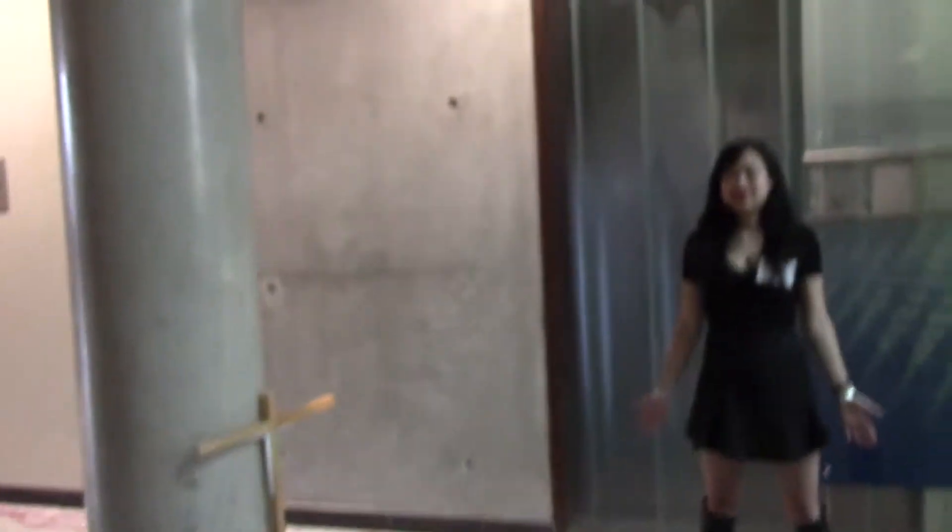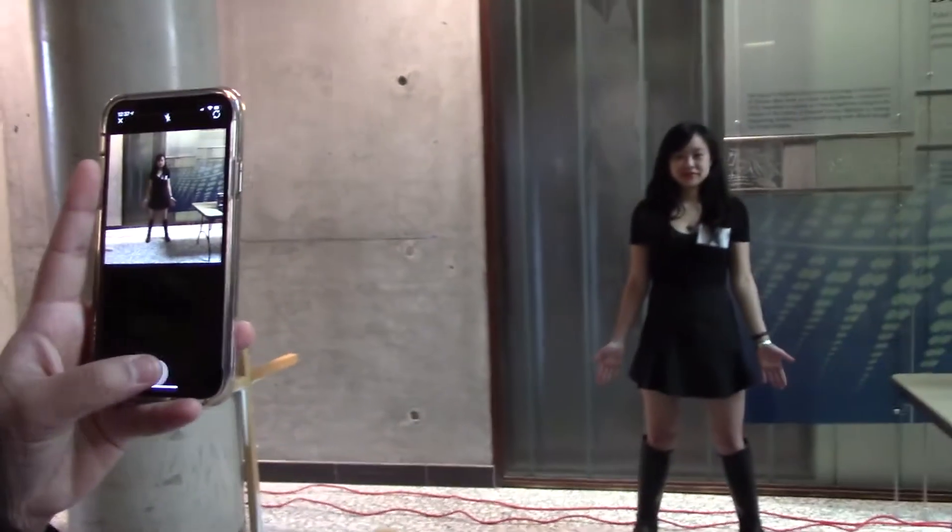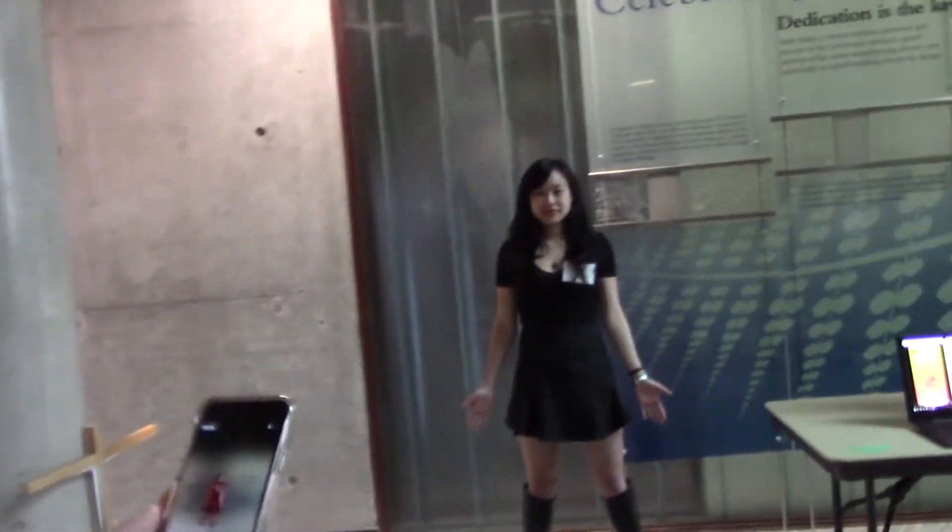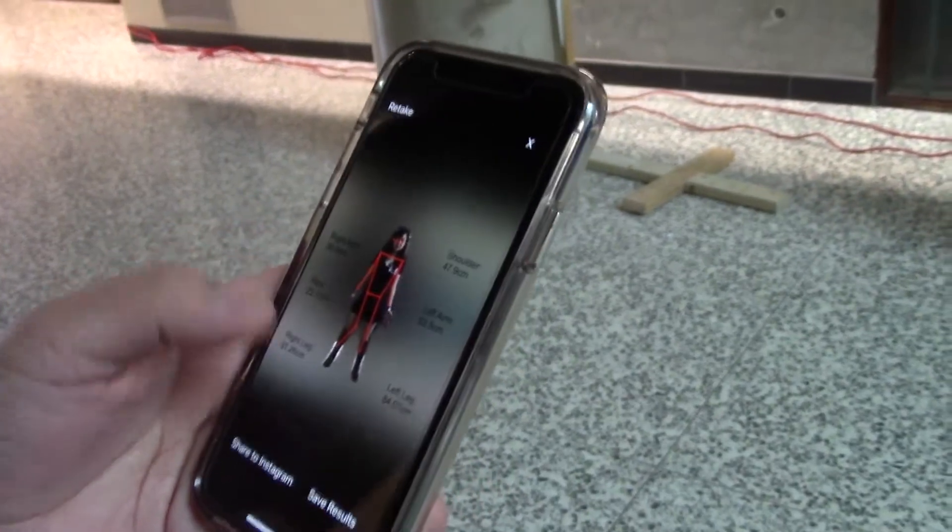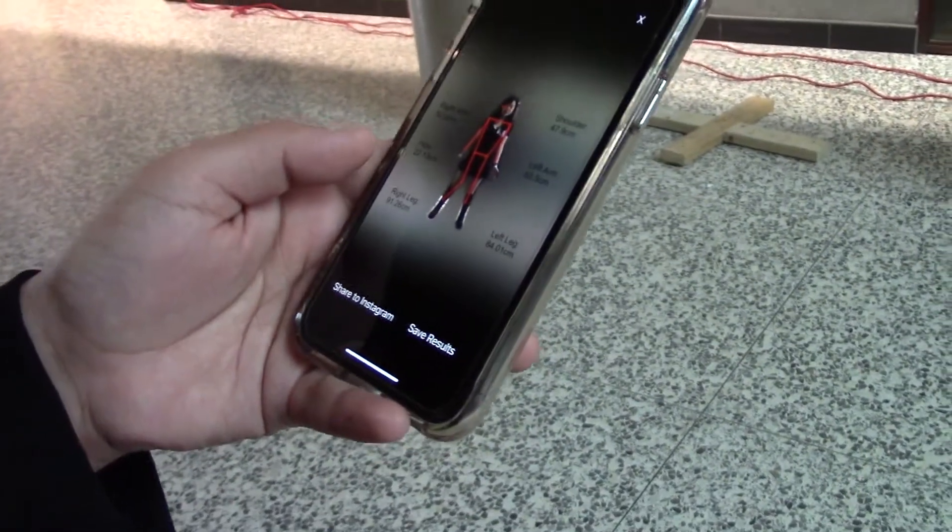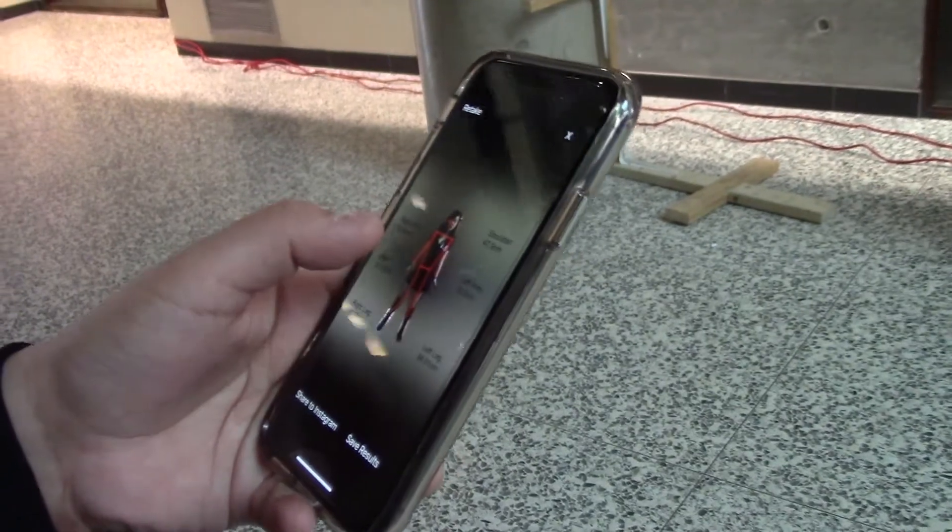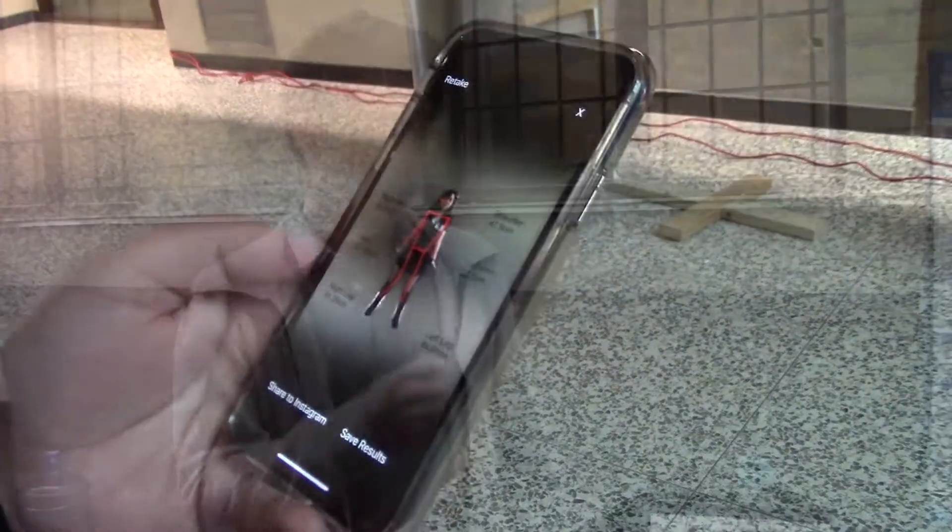So I'm going to take a photo of Serena. And as you can see on the output we get Serena's measurements of her shoulder, arms, hips, and legs, as well as the pose that shows the joints of her body.